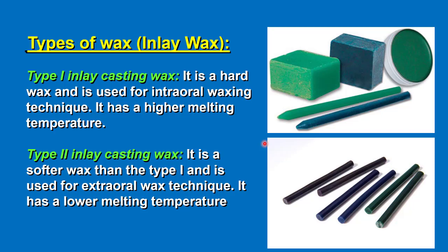The wax used to create wax patterns is called the inlay casting wax or inlay wax. There are two types. Type 1 inlay casting wax is a hard wax and is used for the intraoral waxing technique; it has a higher melting temperature. Type 2 inlay casting wax is a softer wax than type 1 and is used for the extraoral waxing technique. The wax may come in different forms: either blocks, sticks, or in containers.